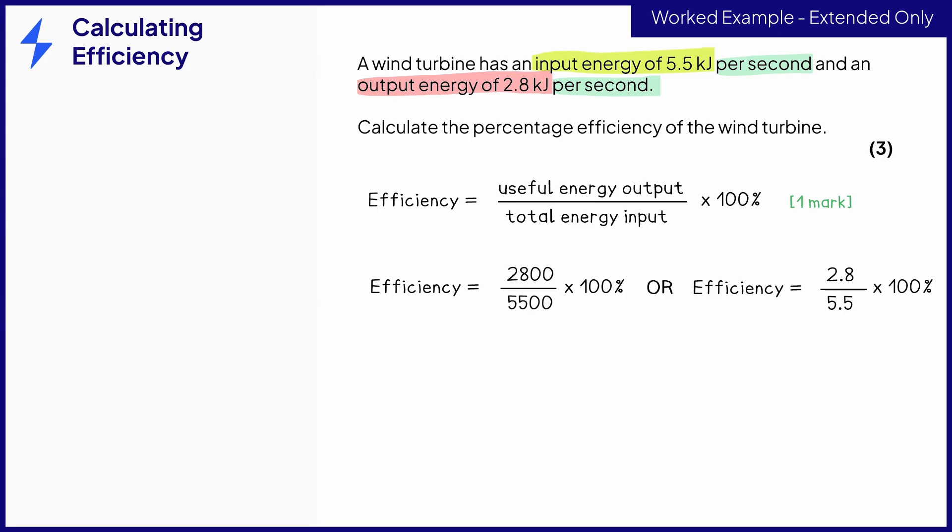This is the step that you need to take care with. This is where students often make mistakes. Useful output goes on the top. That's 2,800 joules or 2.8 kilojoules. And the total input goes on the bottom. That's 5,500 joules or 5.5 kilojoules. Because this is a ratio and the units are the same for both values, we don't need to convert them to joules here. But if you do, that's absolutely fine. The correct substitution gets you the second mark.